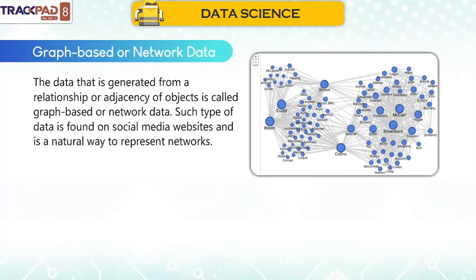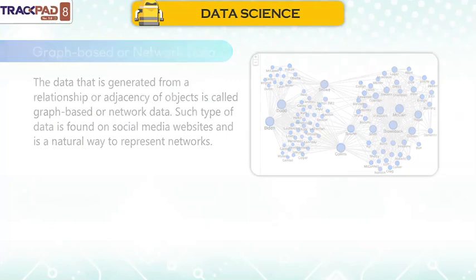Graph-based or network data is generated from a relationship or agency of objects. This type of data is found on social media websites and is a natural way to represent networks.